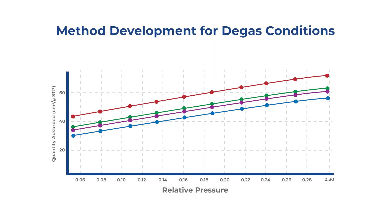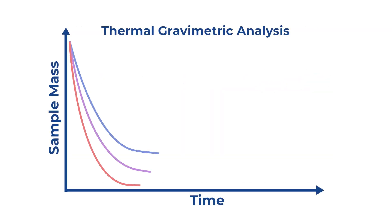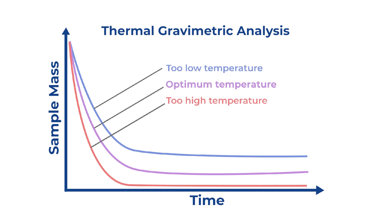To determine the best degas conditions for a new material, it is worthwhile to take some time to do a method development by experimenting with different temperatures and durations. Also, a thermal gravimetric analysis can give insight into how much it takes for a sample to be completely degassed while holding at one temperature.